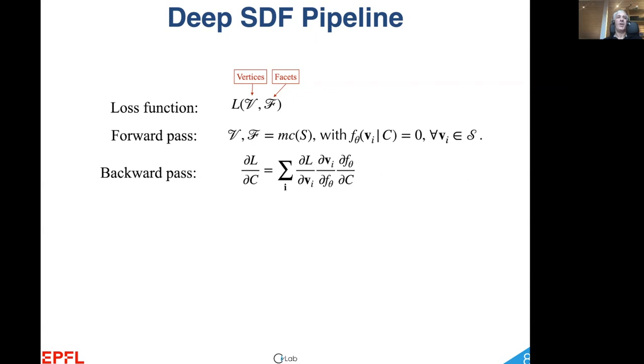However, we cannot easily compute the gradient of L during the backward pass because the output of Marching Cubes is not differentiable. To do it, we must instead exploit an important property of signed distance functions.